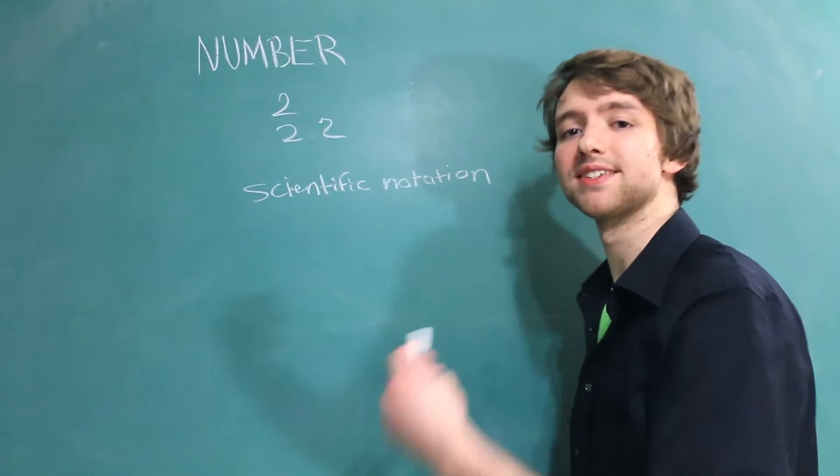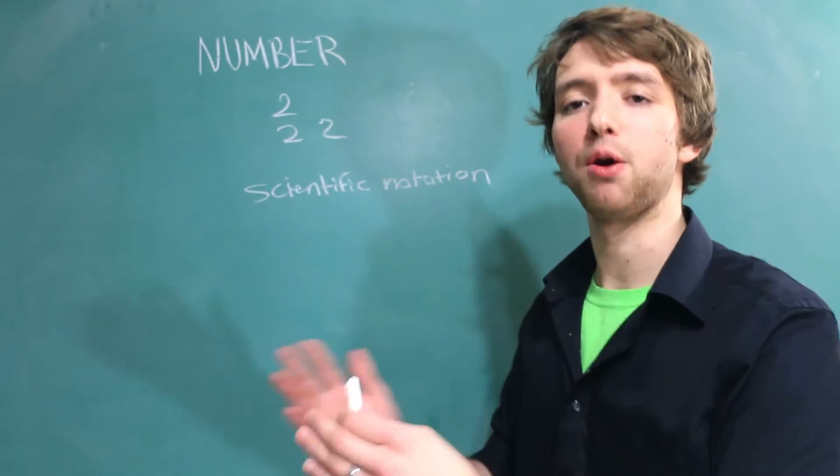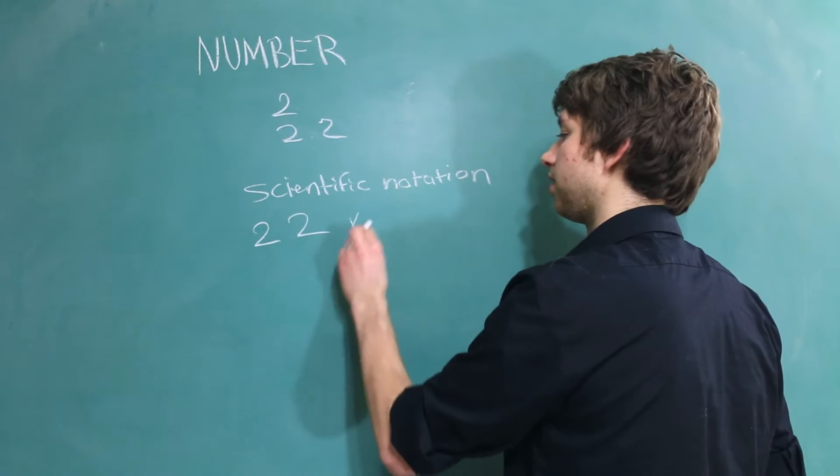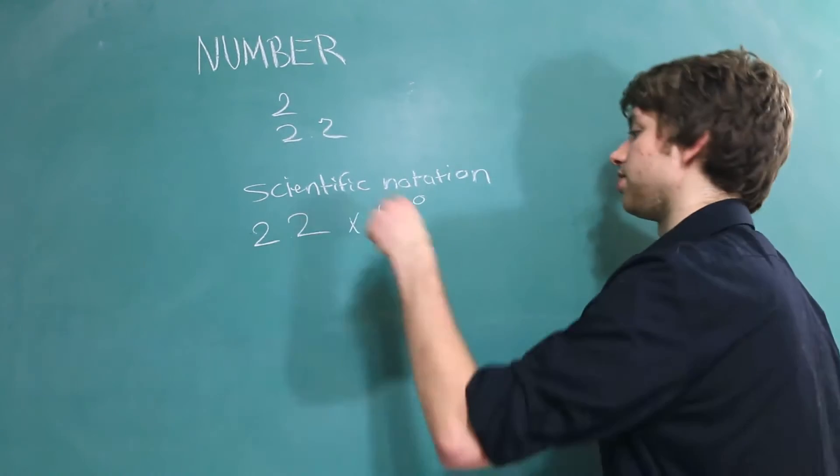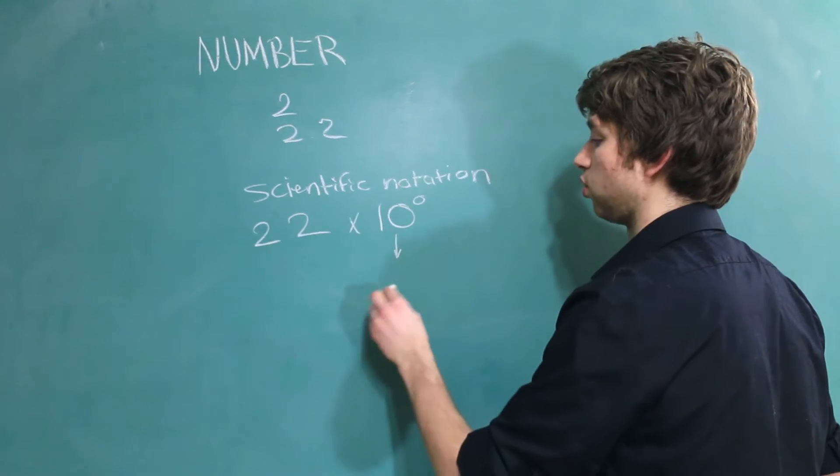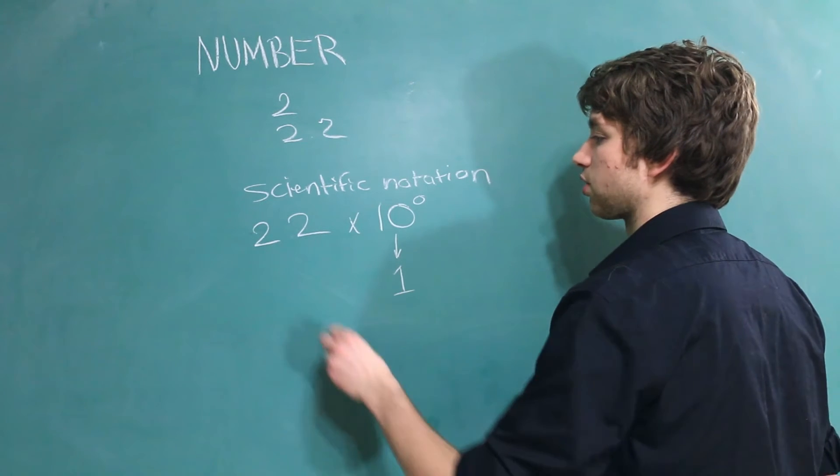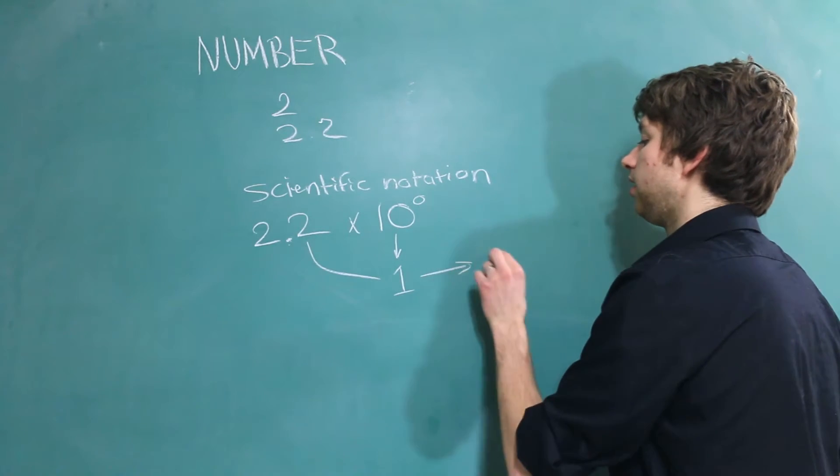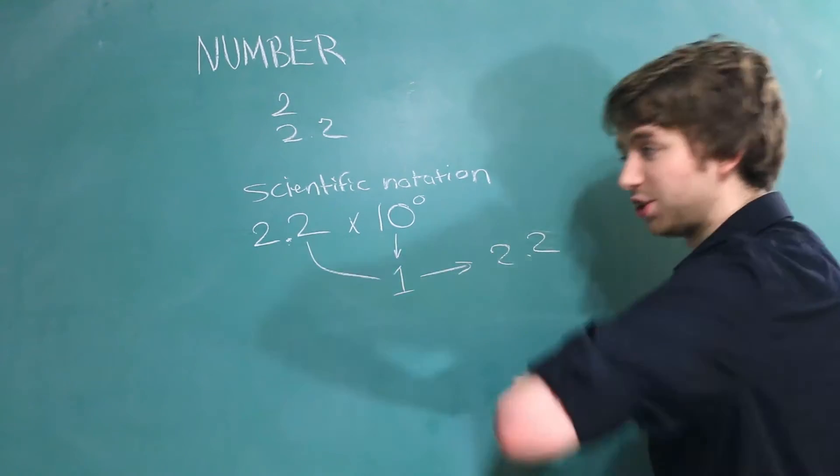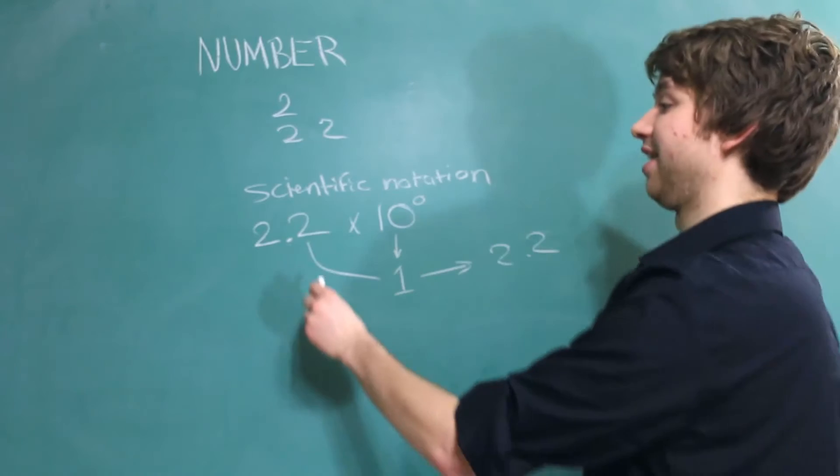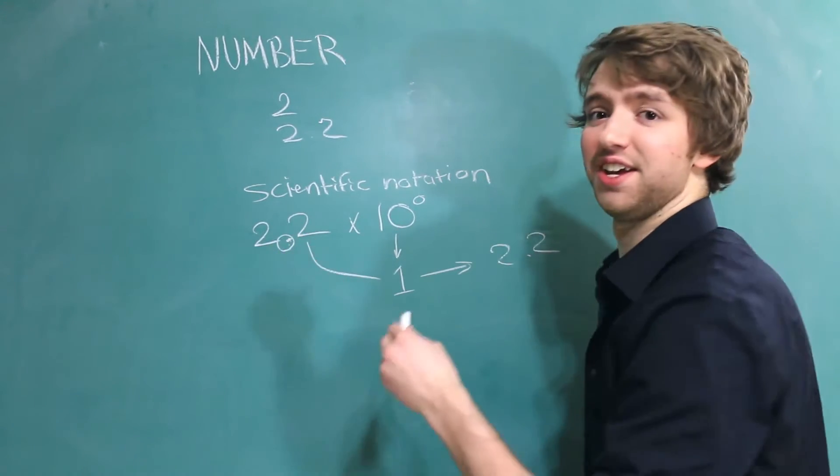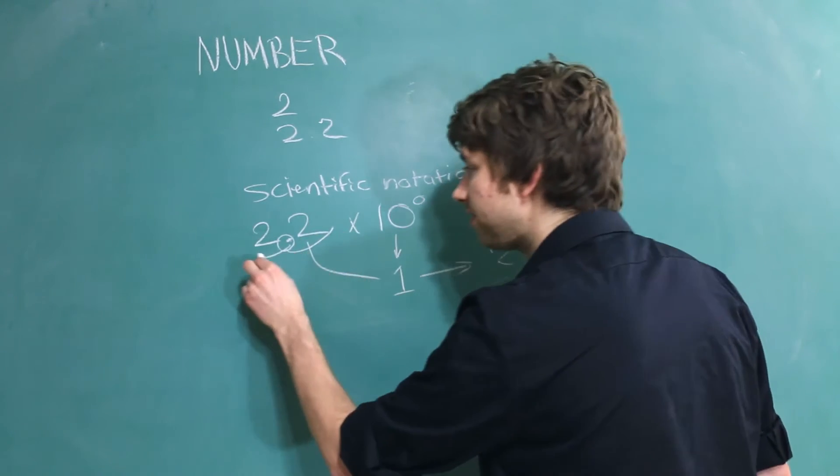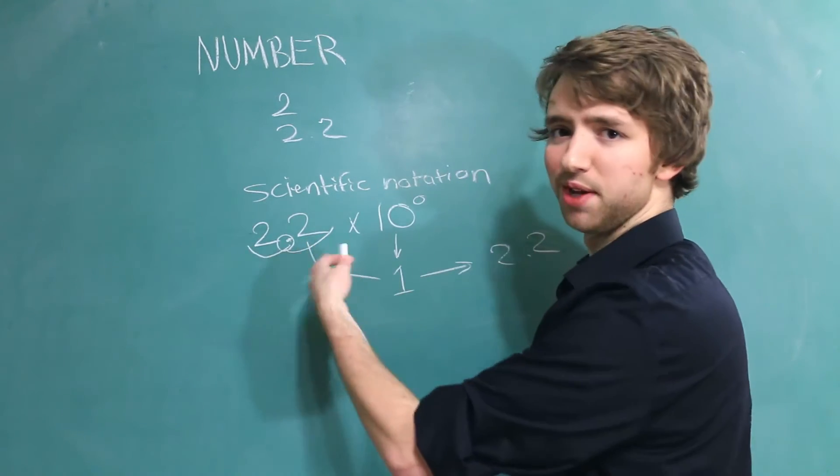It's essentially a way to express a number using a power of 10. So we could say 2.2 times 10 to the 0. 10 to the 0 evaluates to 1. So 2.2 times 1 equals 2.2. Now you could, theoretically, take this dot and move it. So we could move it this way, or we could move it that way. Generally it's supposed to be right there, so this is a really crappy example.